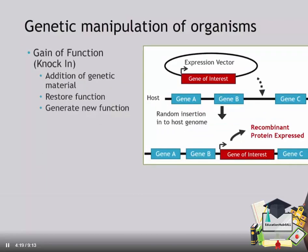Another method for manipulating the genomes of algae and other organisms is a gain-of-function mutation, or a knockin. This is the addition of genetic material, and it's often used to either restore the function of a mutant or generate new function. Here we're showing the integration of an expression cassette into the host genome, in this case randomly integrating into the genome in an untargeted manner, and generating the expression of a recombinant protein.